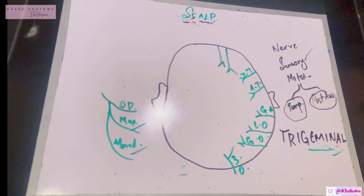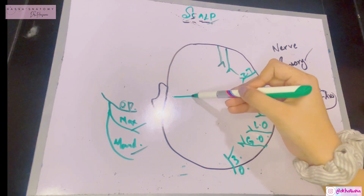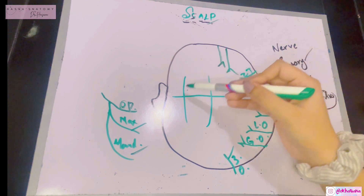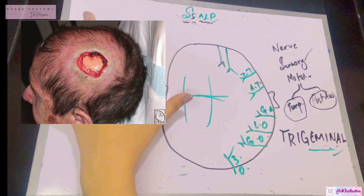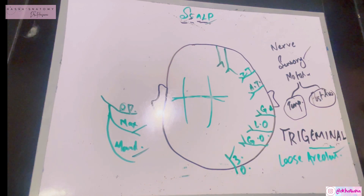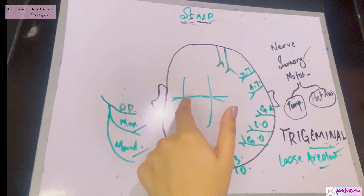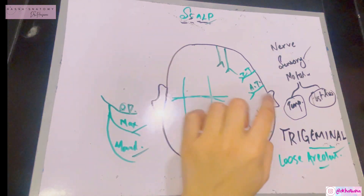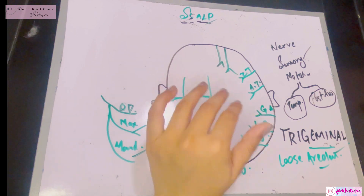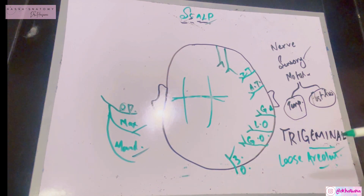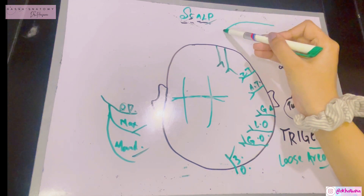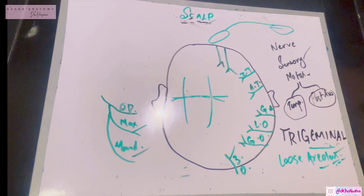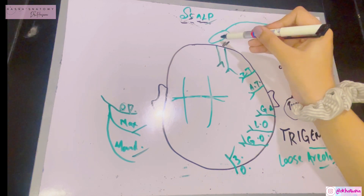Now for clinical correlations. Transverse wounds to the scalp cut the epicranial aponeurosis transversely, causing widely open wounds with large gaps. The loose areolar tissue is the dangerous area because it contains emissary veins connecting extracranial veins to intracranial veins — so scalp infections can travel through emissary veins to reach the meninges and brain, causing dangerous intracranial infection.